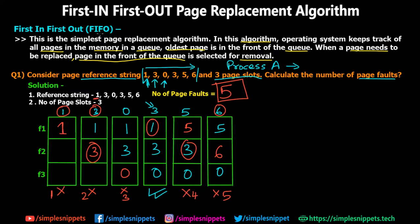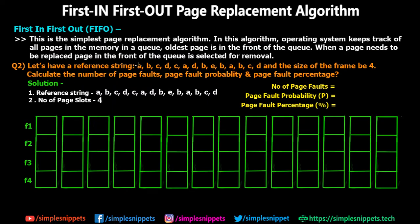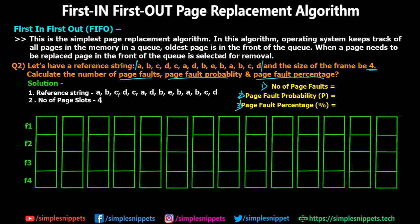Now let's look at a slightly longer numerical. This question has a reference string using alphabets — A, B, C, D and so on — instead of numbers. They are just page names; they can be symbols, numbers, or alphabets. The frame size is four this time. We are required to find three things: the number of page faults, the page fault probability, and the page fault percentage.